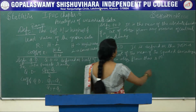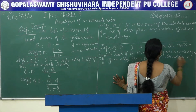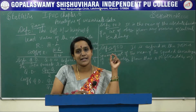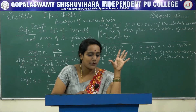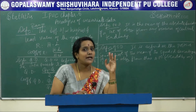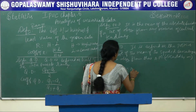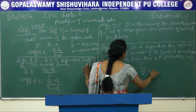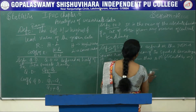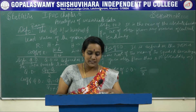Standard deviation is denoted by sigma. Based on whether the data is grouped or ungrouped, we have different formulas to calculate it. The coefficient of standard deviation is sigma divided by x-bar, multiplied by 100 for comparison purposes when solving problems.